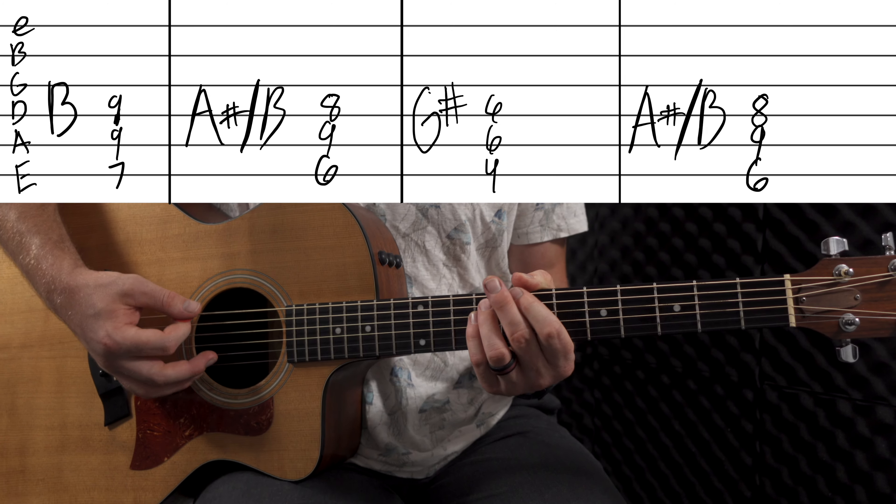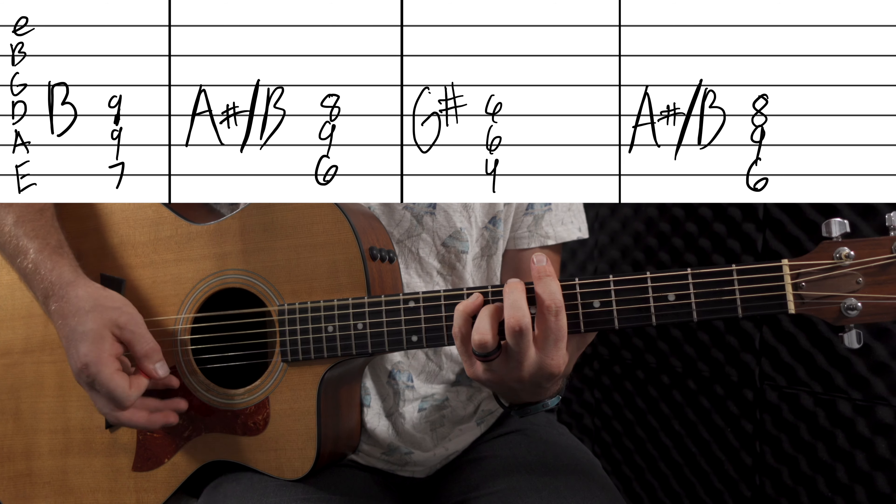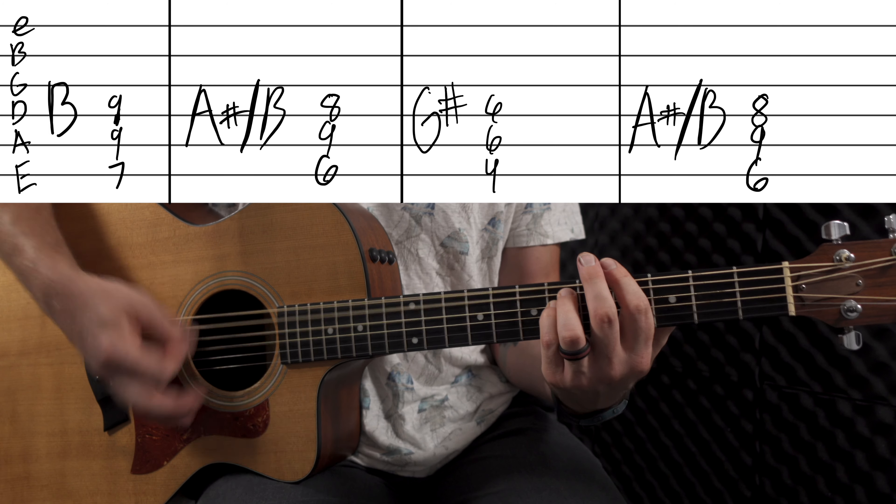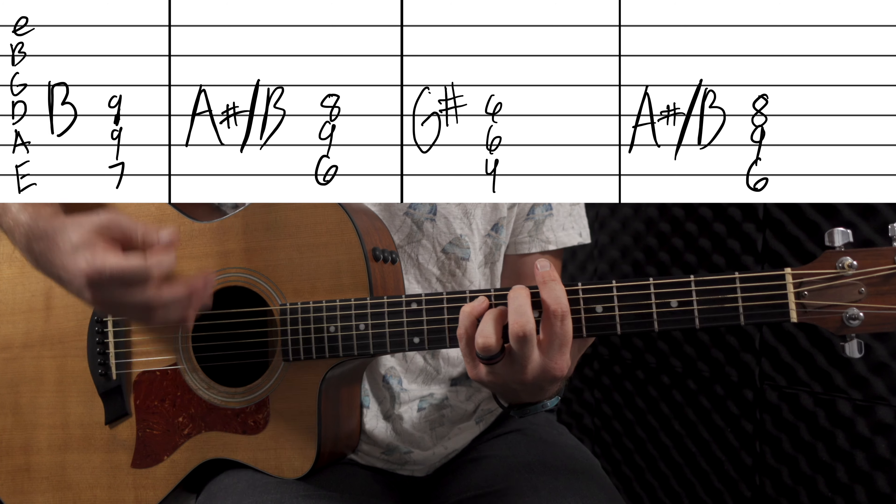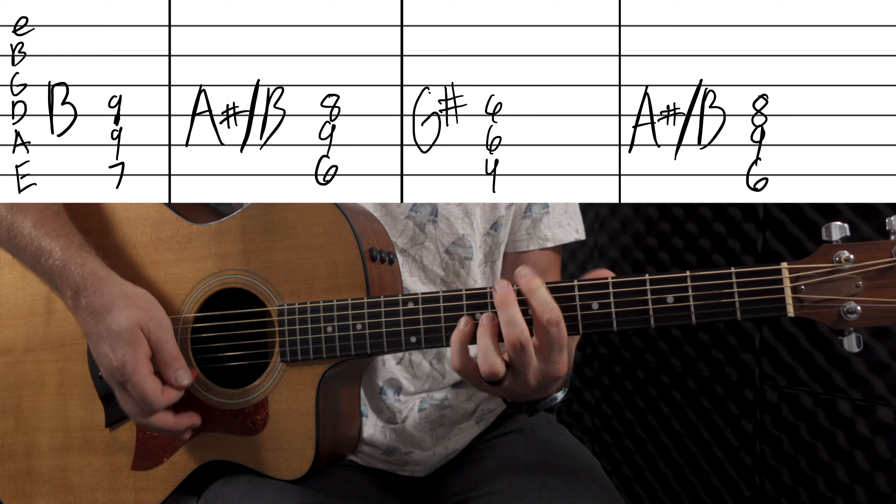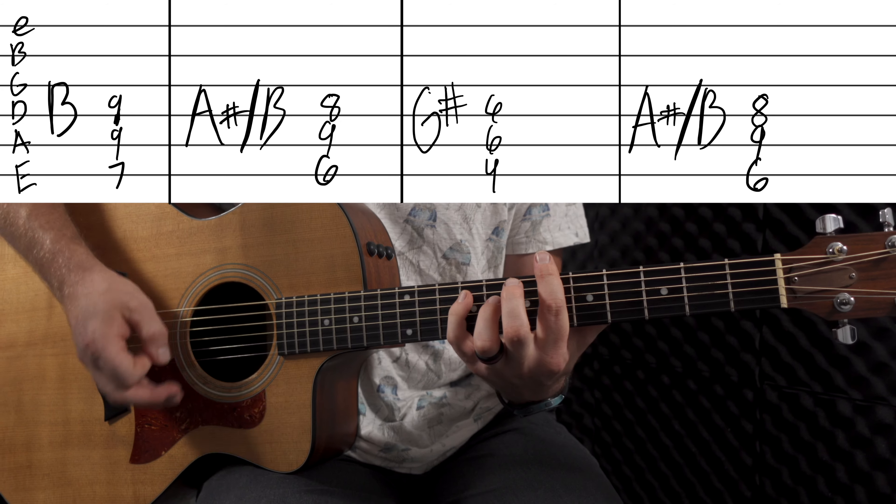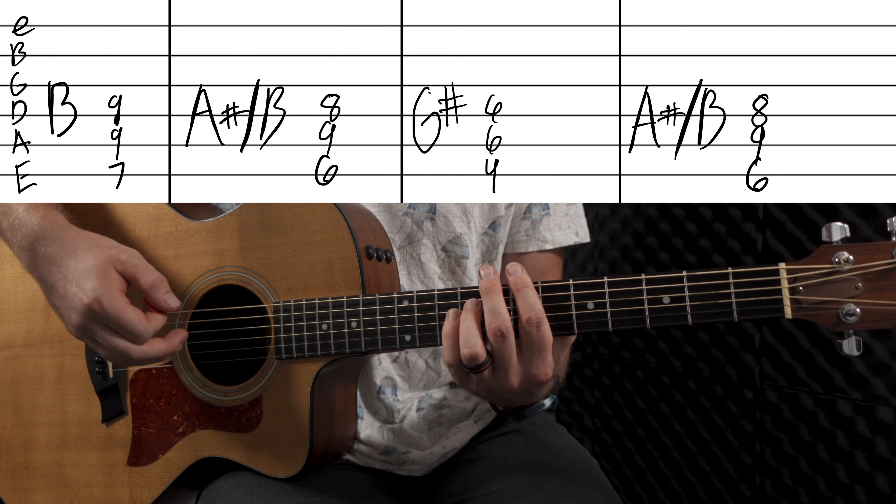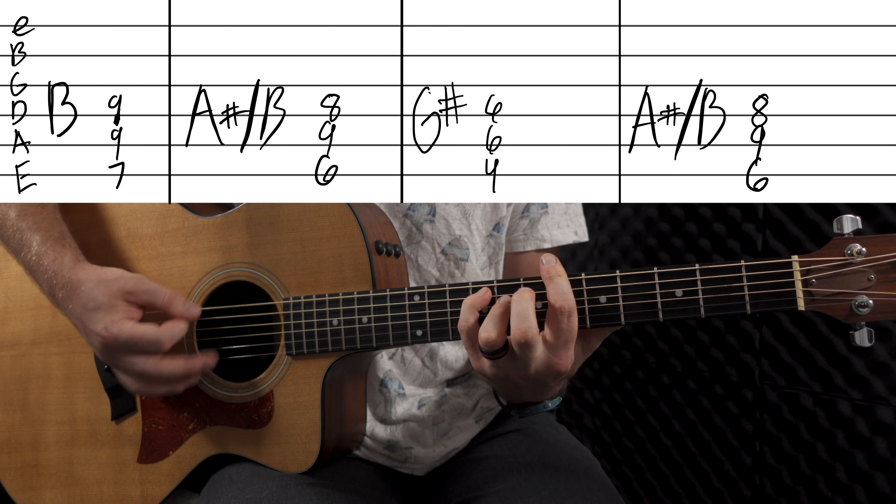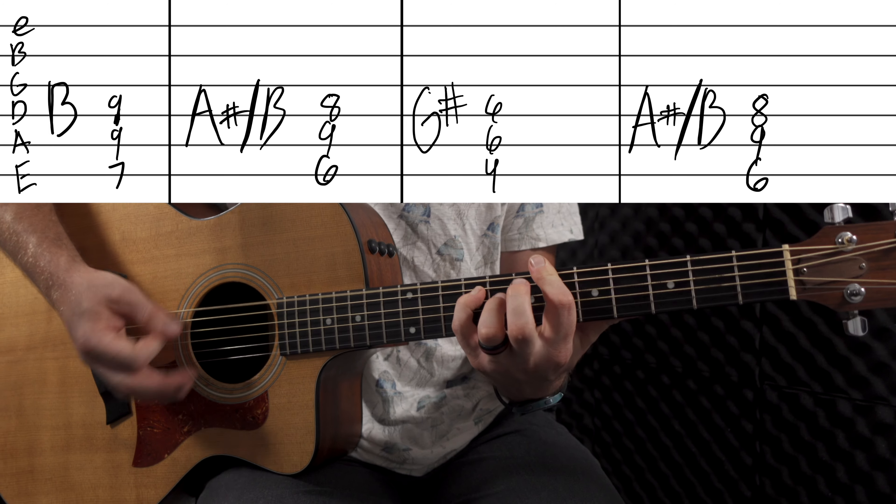So in the verse, he does palm mutes. So palm muting of the B, palm muting of the A sharp, then we go down to the G sharp, palm muting, and then it goes back up to the A. And he does that twice.